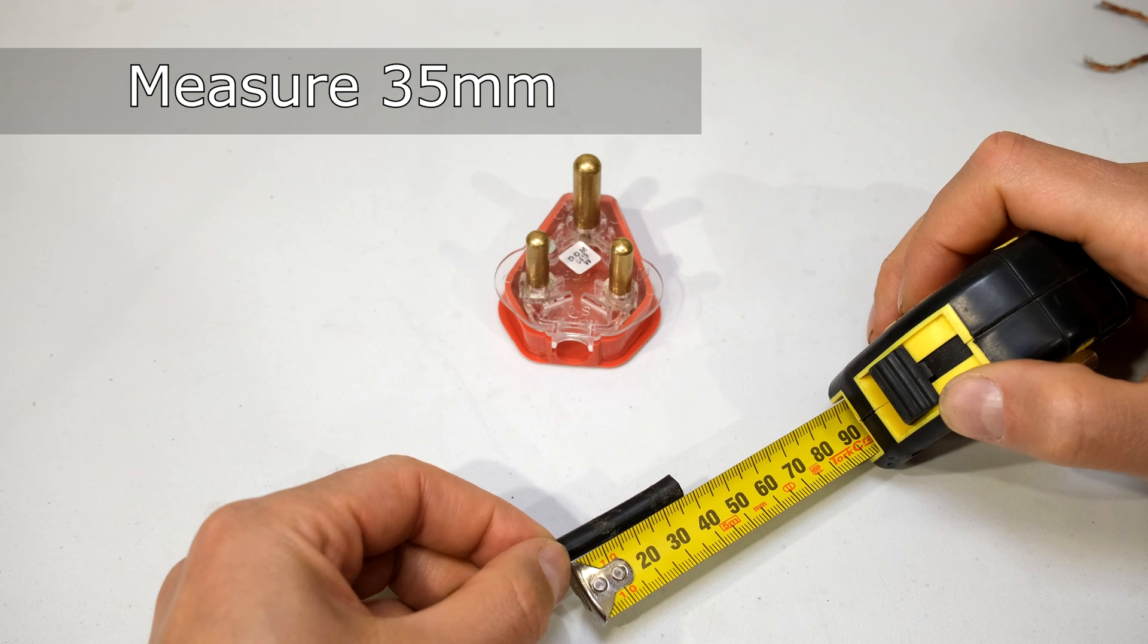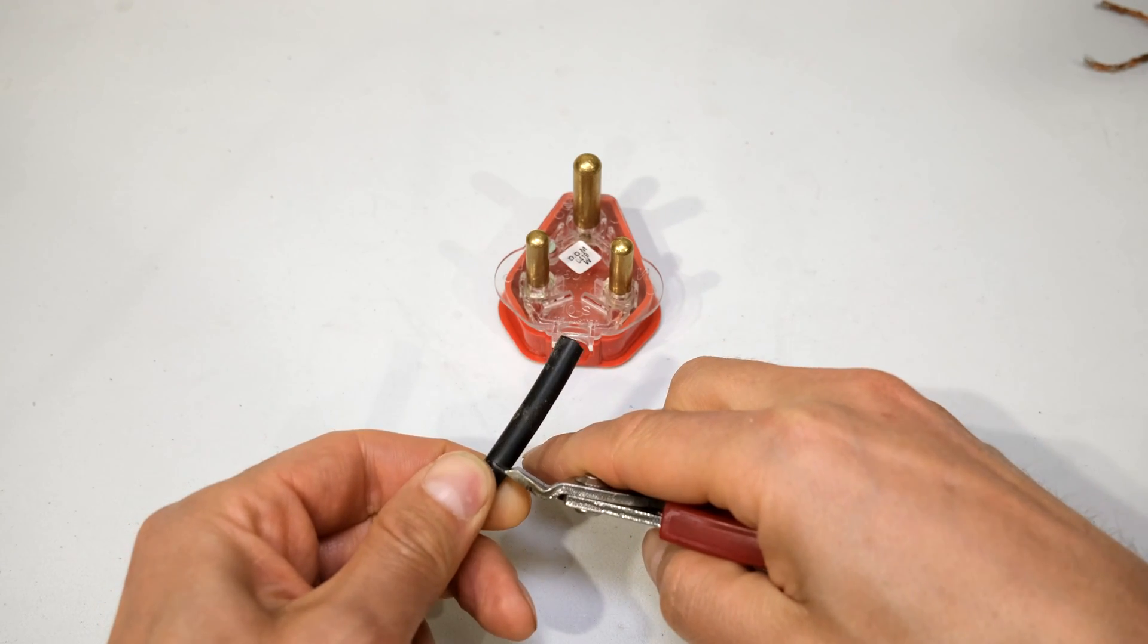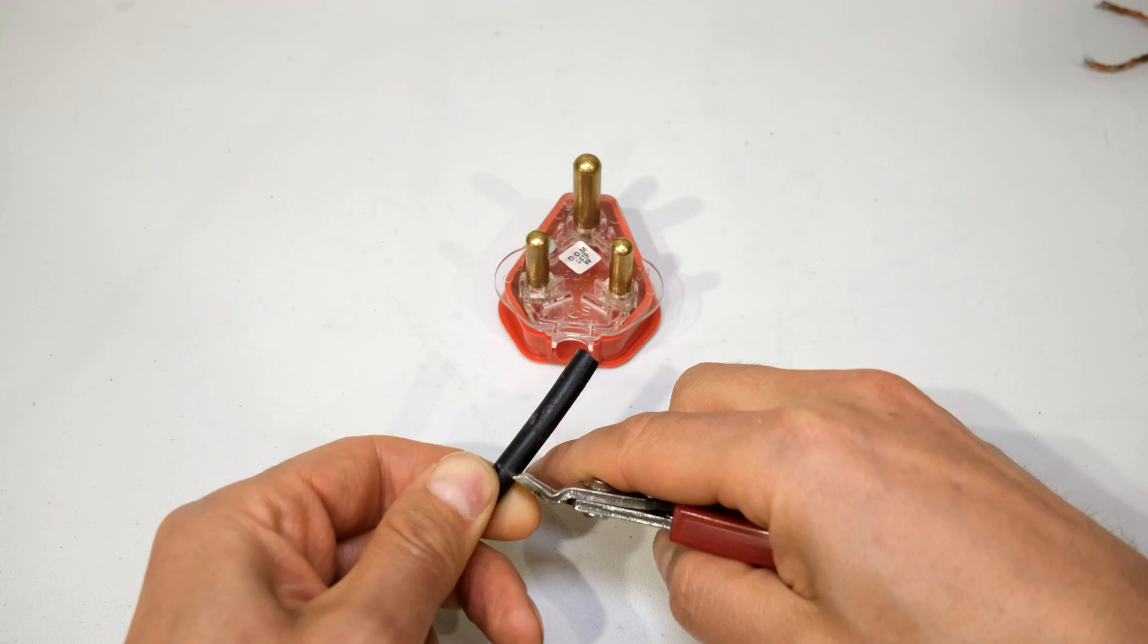Right, here is the cable wire. I measure 35 millimeters. I take my side cutters and I gently just cut partially into the jacket.